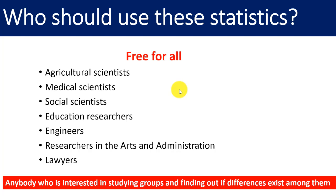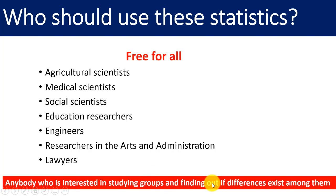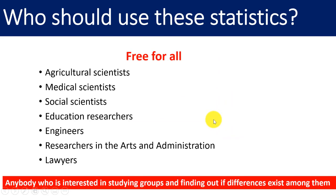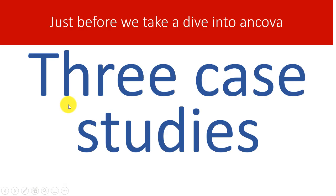What scientists should use these statistics — ANOVA, ANCOVA — they're actually free for all. Agricultural scientists, medical scientists, social scientists can use them. The originators or inventors were statisticians and scientists, so educational researchers, engineers, lawyers — you can use all the statistics. The mathematical models are not different from one discipline to another. The same model applies to all.